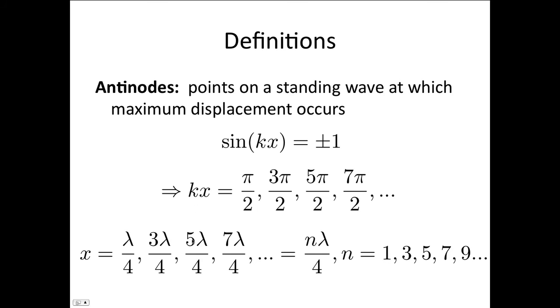And so solving this in exactly the same way as before, we get x equals λ/4, 3λ/4, 5λ/4, 7λ/4, etc. So this has the general form nλ/4, where n is every second, or the odd numbers 1, 3, 5, 7, 9, etc.